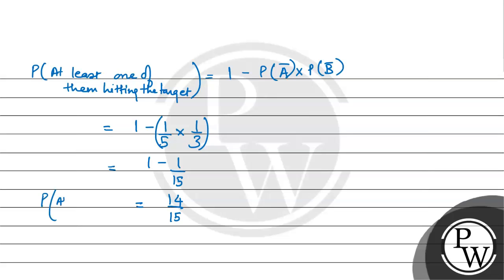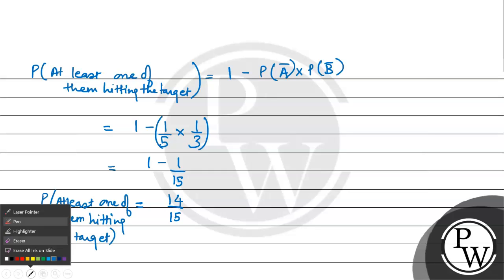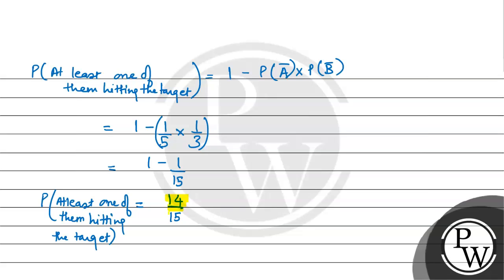This is the probability of at least one of them hitting the target. The final answer is 14 by 15. I hope you understood it well. Best of luck.